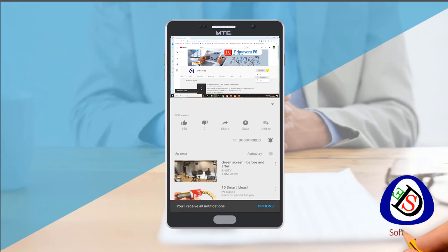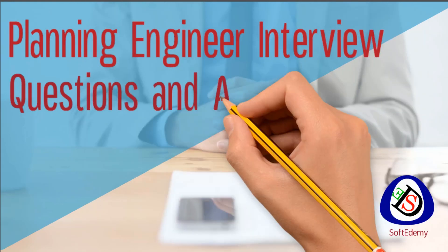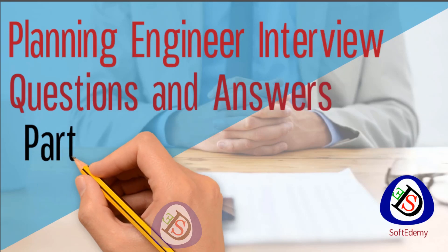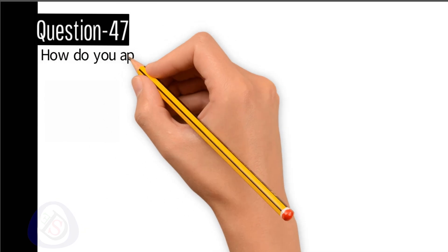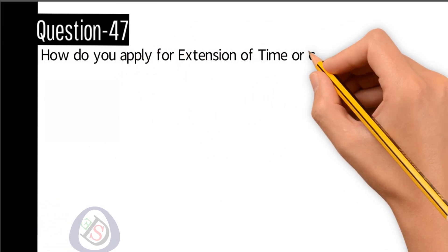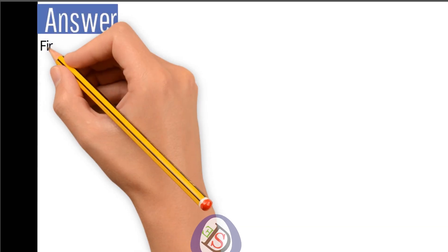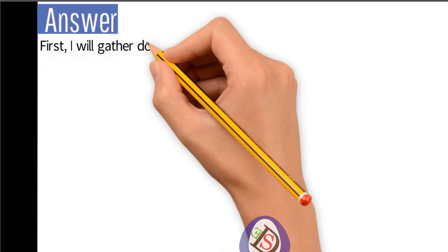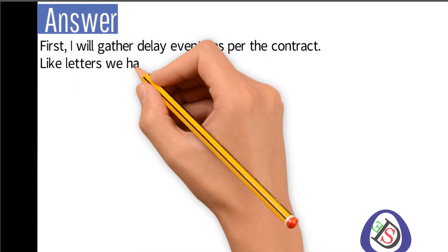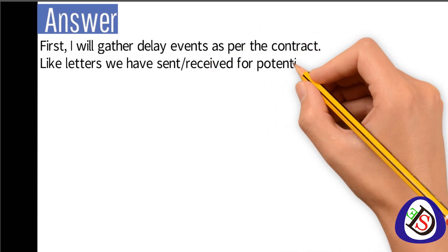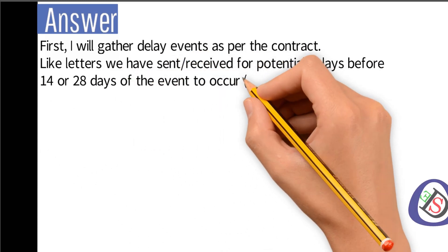Welcome viewers to Soft Demi. You are watching Planning Engineers Question and Answers, Part 6. Question number 47: how do you apply for extension of time or conduct a delay analysis? Answer: first, I will gather delay events as per the contract, like letters we have sent or received for potential delays before 14 or 28 days of the event to occur as per the contract.